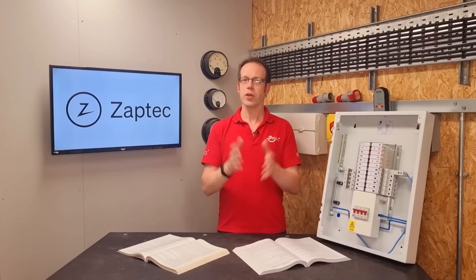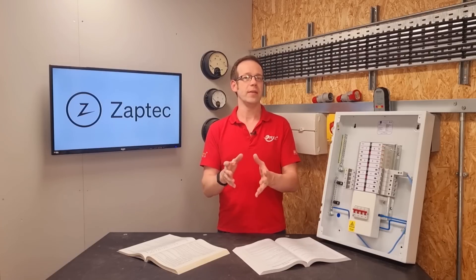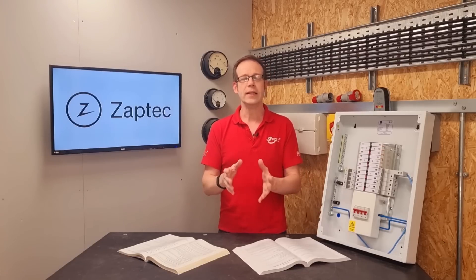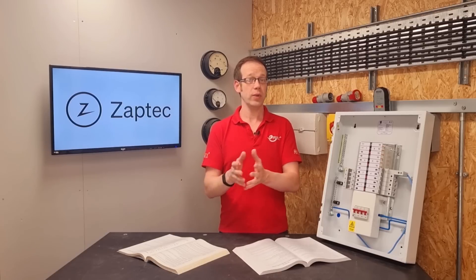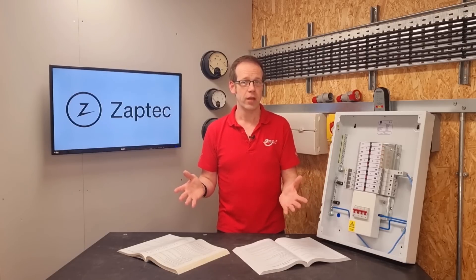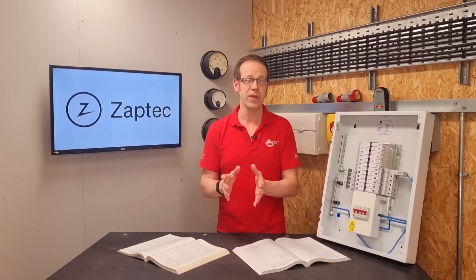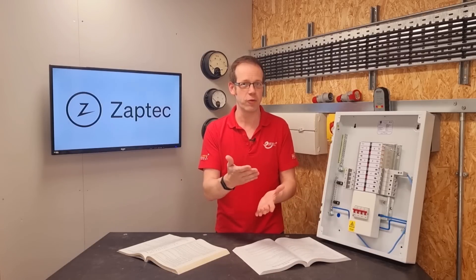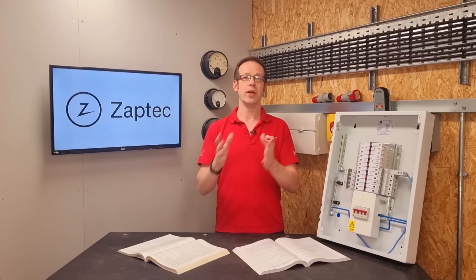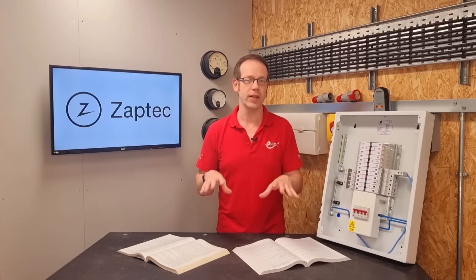In a three-phase system though, the current in the neutral works a little differently. In fact, if the loads on each phase are perfectly balanced or equal, then the current in the neutral would be zero and you can actually do without the neutral connection entirely. So if a PEN fault occurred on a perfectly balanced three-phase system, then there'd be no neutral current trying to find its way back to the transformer and the voltage between the bodywork of the car and the actual earth we walk around on will be effectively zero.